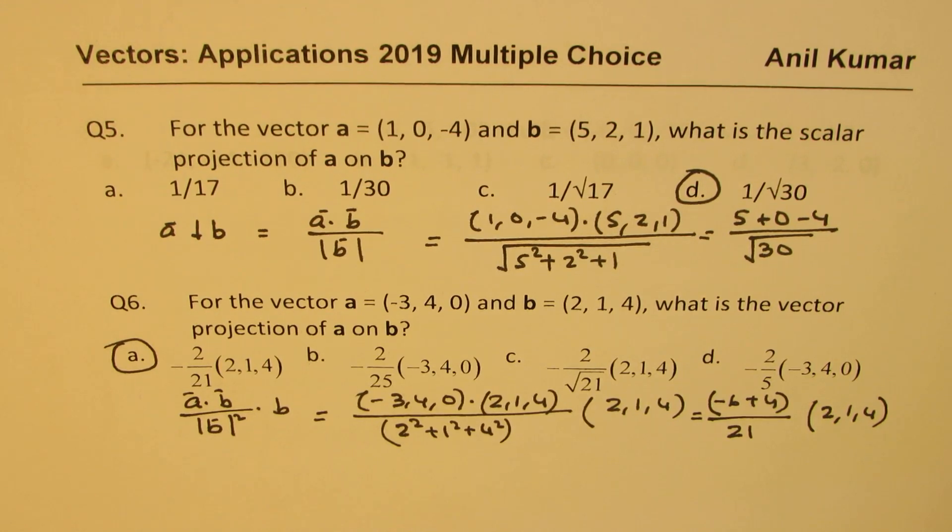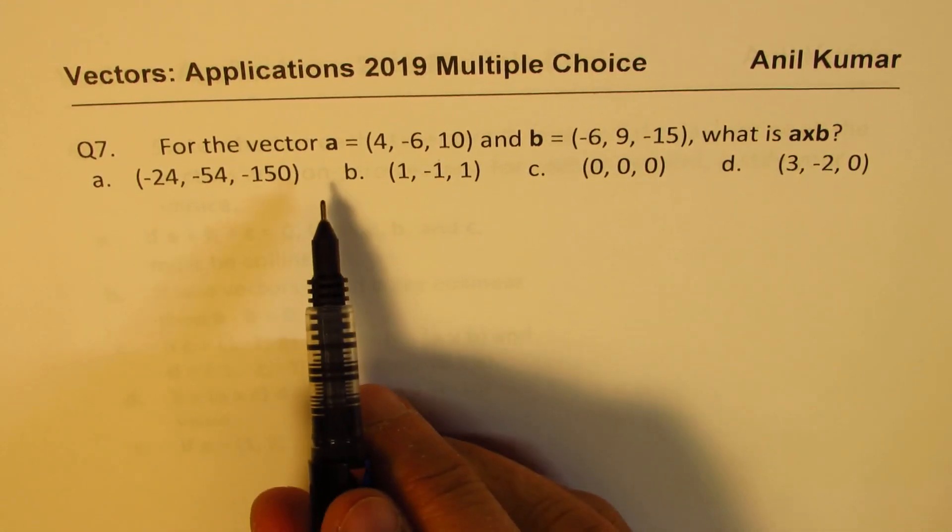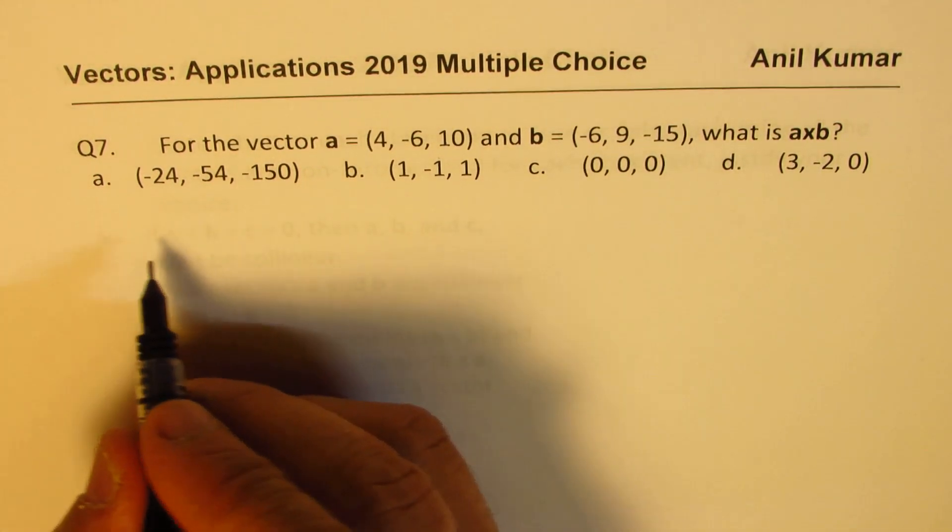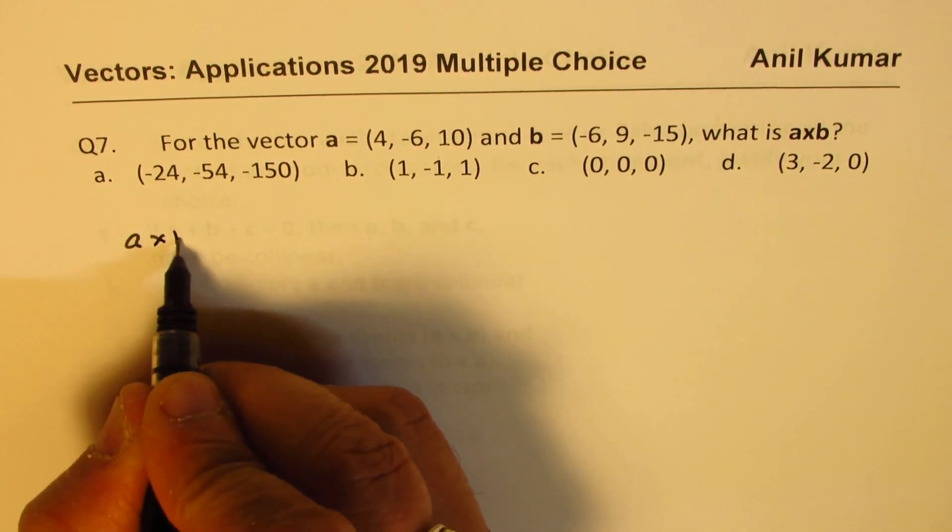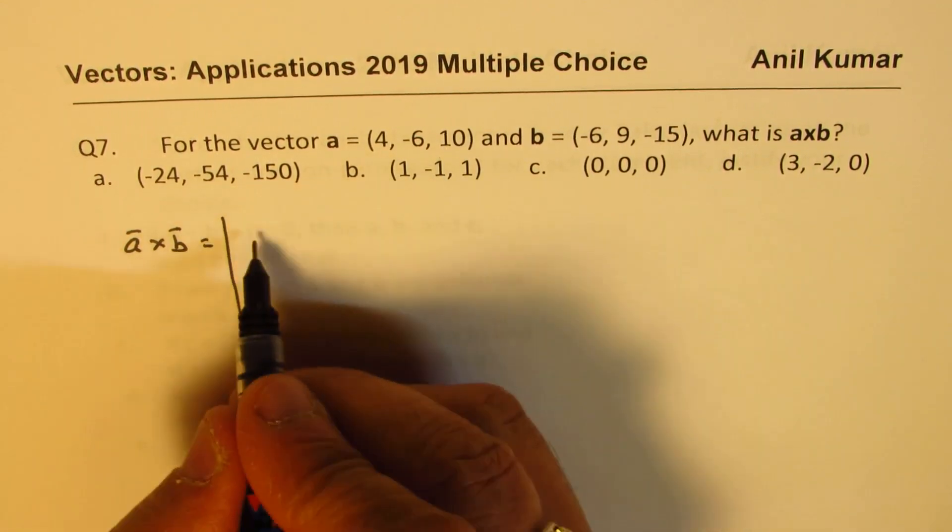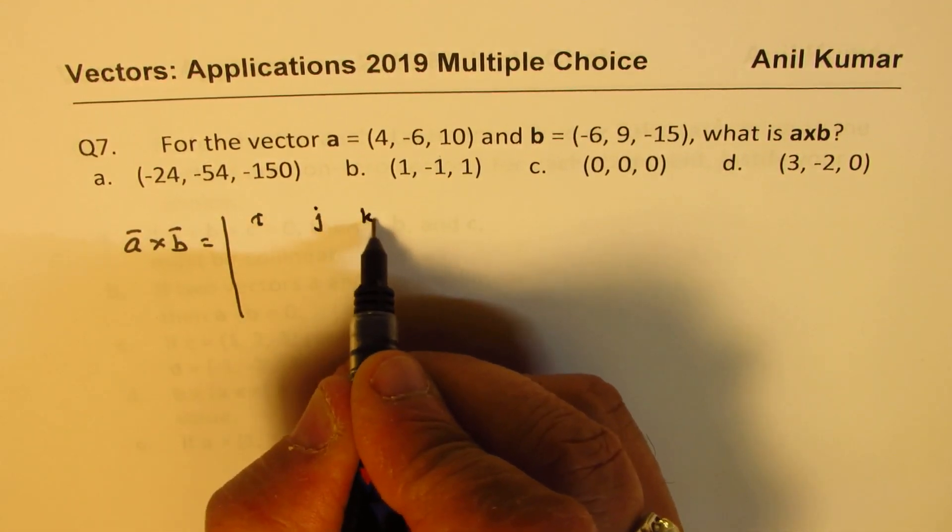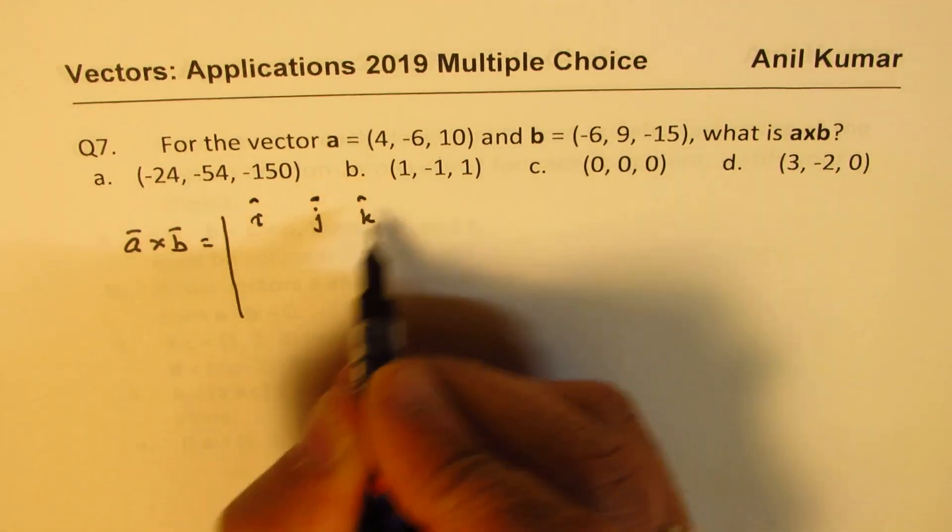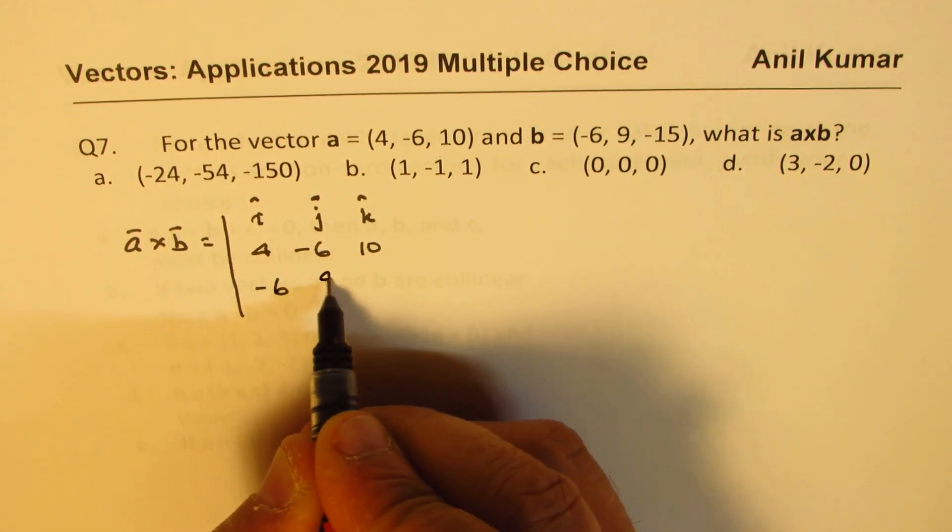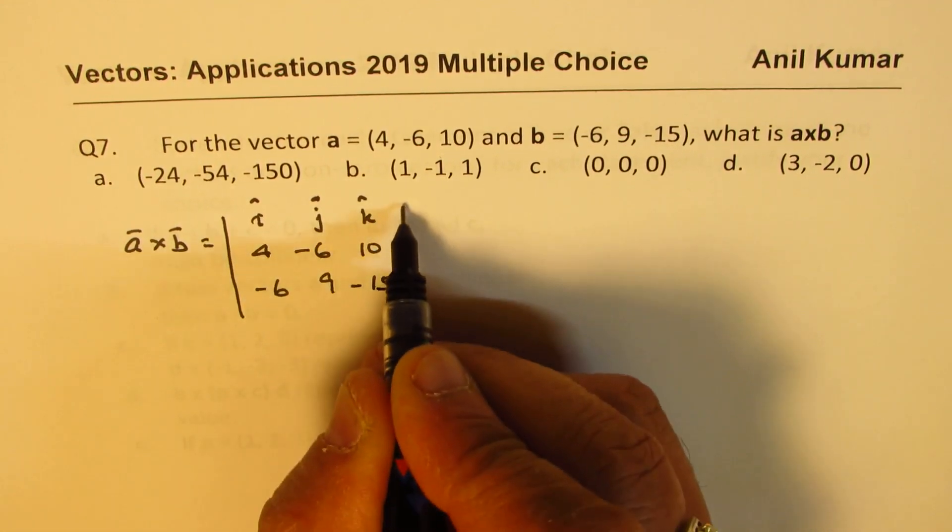Let's move on and take the next question number 7. For the vectors A and B, what is the cross product? So let's find the cross product, A cross B. You can use the matrix form. So you can I, J, K. A is (4, -6, 10), B is (-6, 9, -15).